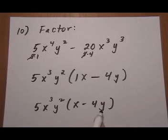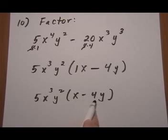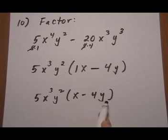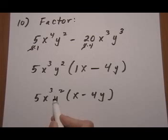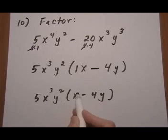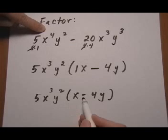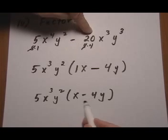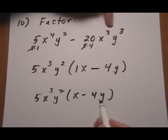Multiplying it back out to check, we'll see if we get the original back. Also check that inside the parentheses there's no remaining greatest common factor — if there is, it's okay, it just means you need to keep going, pulling out common factors until you're completely done. Multiplying back: 5x³y² times x gives 5x⁴y². Then take away — 5 times 4 is 20, and x³y² times y gives y³. So we get 5x⁴y² − 20x³y³ back. It checks out.